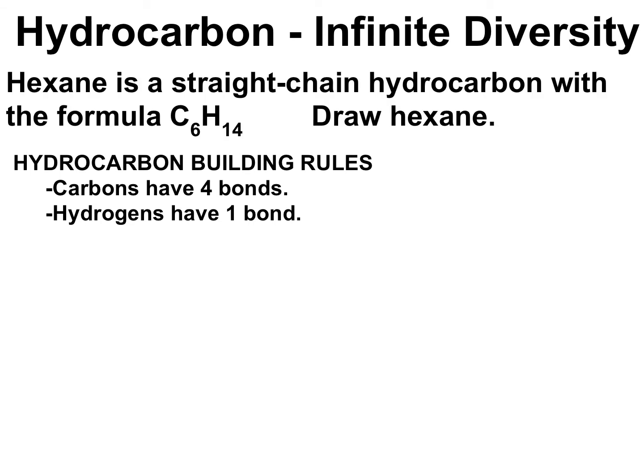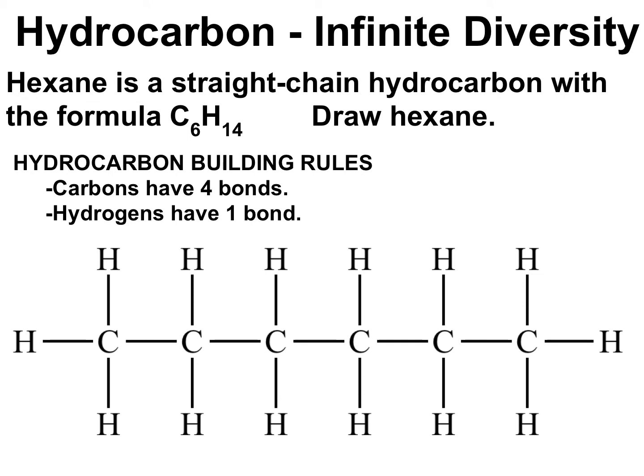Let's start with hexane, a straight chain hydrocarbon with six carbons and 14 hydrogens. Using those two simple rules, can you draw hexane? Pause the video and give it a shot. So here's hexane — one, two, three, four, five, six carbons. Six hydrogens on each side makes 12, plus two on either end — that's 14 hydrogens. We're all set. If you drew that, be proud of yourself. And if you didn't, you'll have lots more chances.